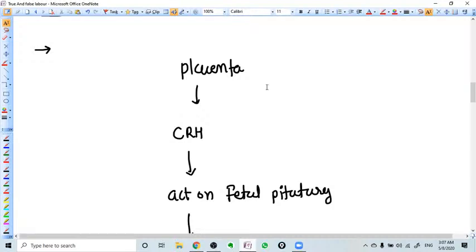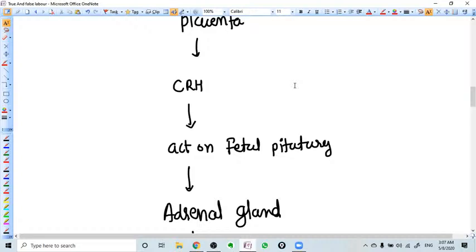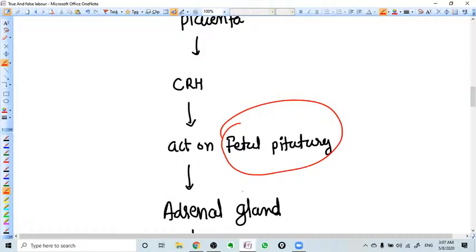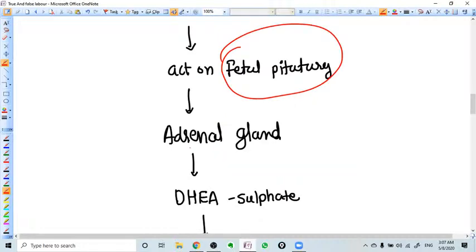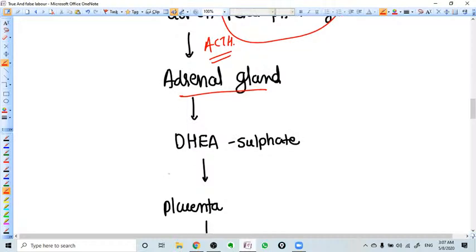CRH will go and act on fetal pituitary. And with this effect, pituitary will start acting on adrenal gland with the help of ACTH.